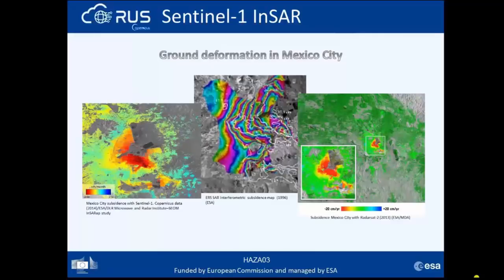Here are some results of InSAR monitoring in Mexico City with different sensors and monitoring periods. In the middle we see the SAR interferometric subsidence map for 1996 using ERS, with subsidence rates of 5 centimeters per year. To the right, the interferogram shows surface deformation for 2013 using RadarSAT with a rate of 20 centimeters per year. To the left, results show ground deformation using Sentinel-1 data for the period 2014, with some areas of the city subsiding at rates up to 2.5 centimeters per month.